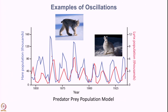On the right axis we have the population of Lynx — a large cat which hunts and eats the rabbits. So the rabbit is the prey and the Lynx is the predator. As you can see, the population of both prey and predator increases, then falls, then increases again — oscillating over time. The x-axis goes from the 1840s all the way to the 1940s, so over a 100-year period you can see the populations of Lynx and rabbits oscillating.